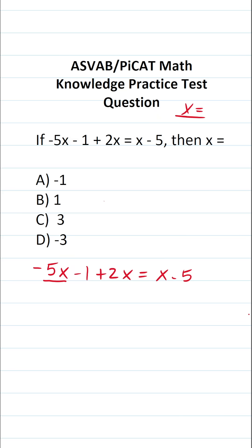On the left-hand side of this equal sign, you can see that we have negative 5x and 2x. Those are like terms, so I can combine them. Negative 5x plus 2x is going to be negative 3x minus 1 equals x minus 5.